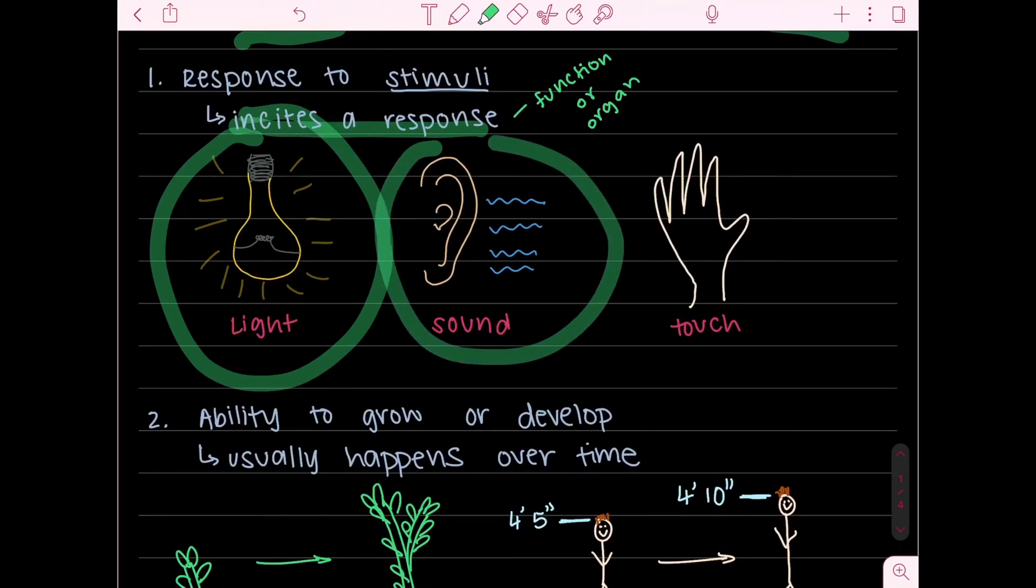For sound, our brain creates an auditory stimulus so that we can formulate the words in our brain and process what somebody is telling us. Sound can also be different for animals but plants don't necessarily have a stimulus to sound.